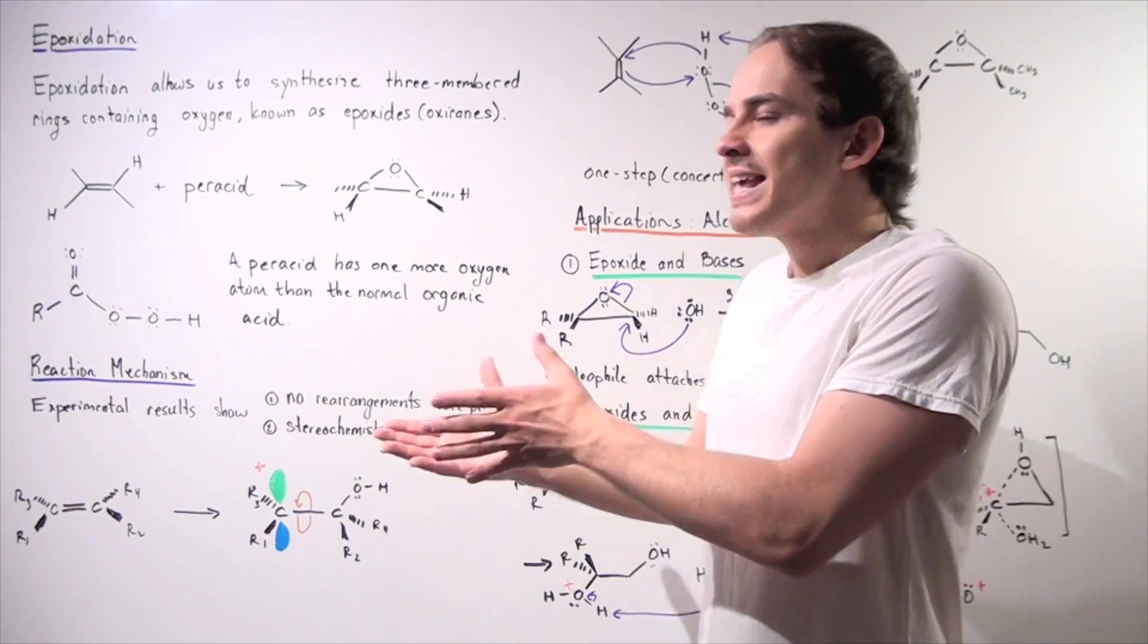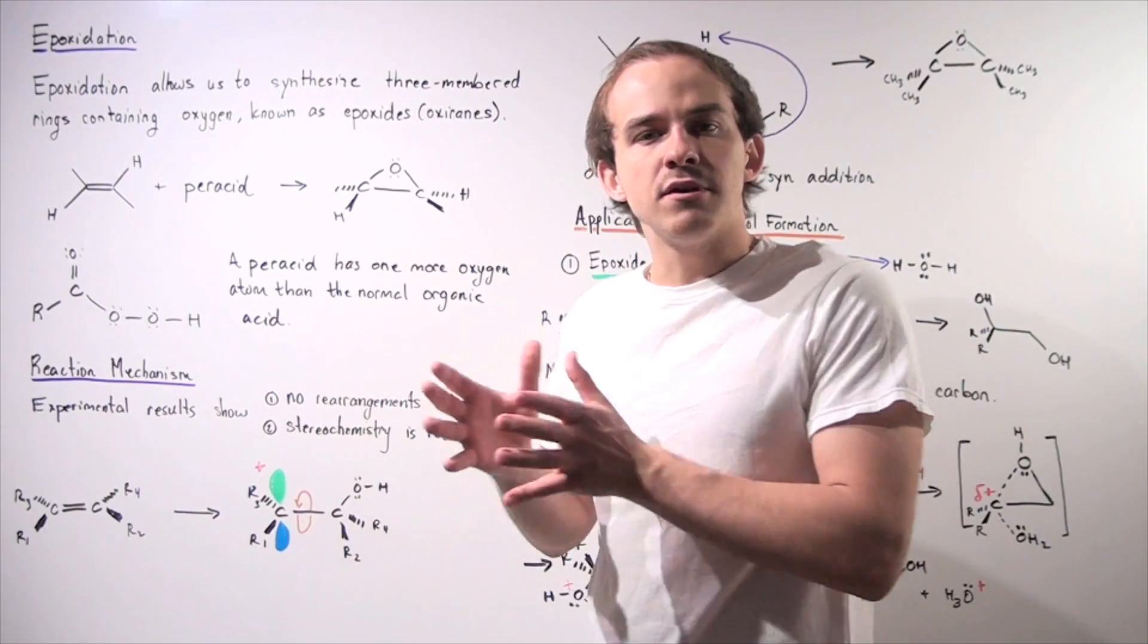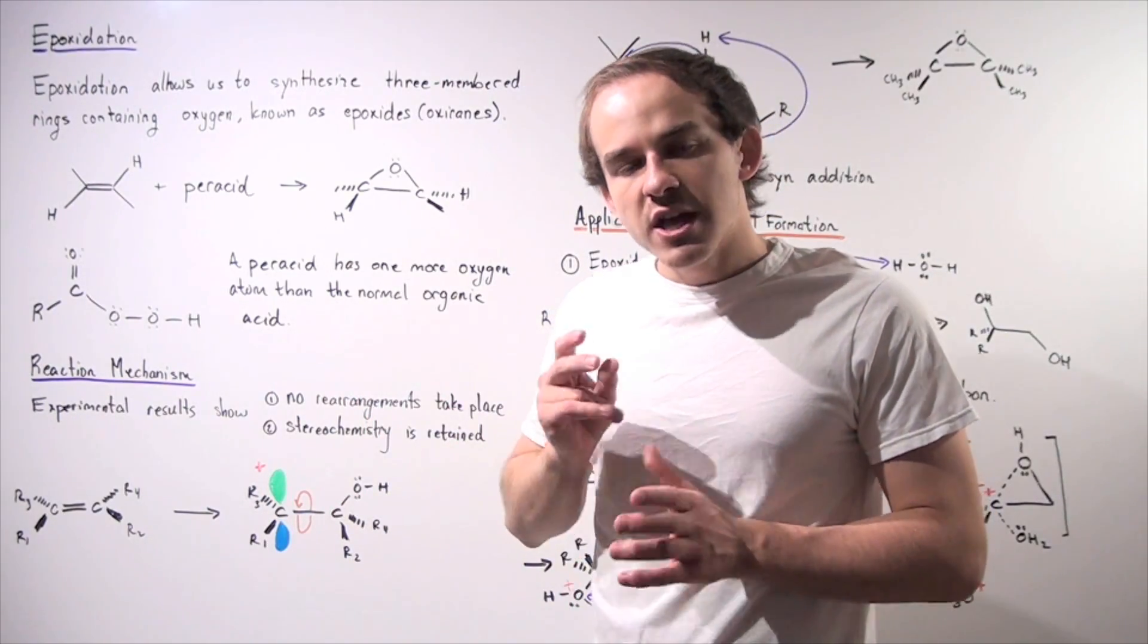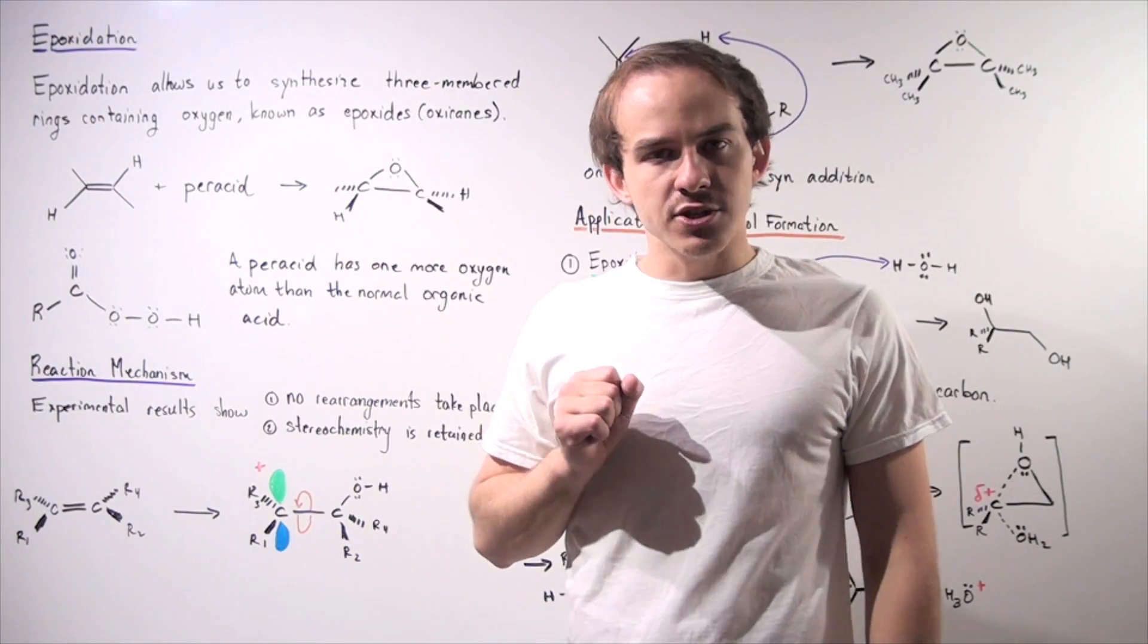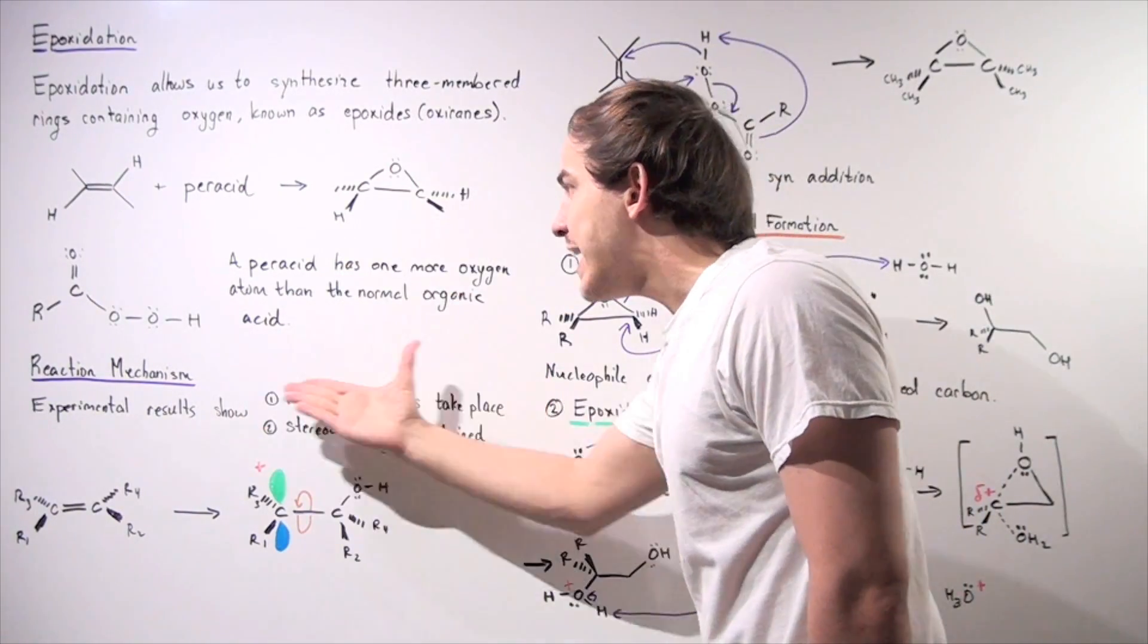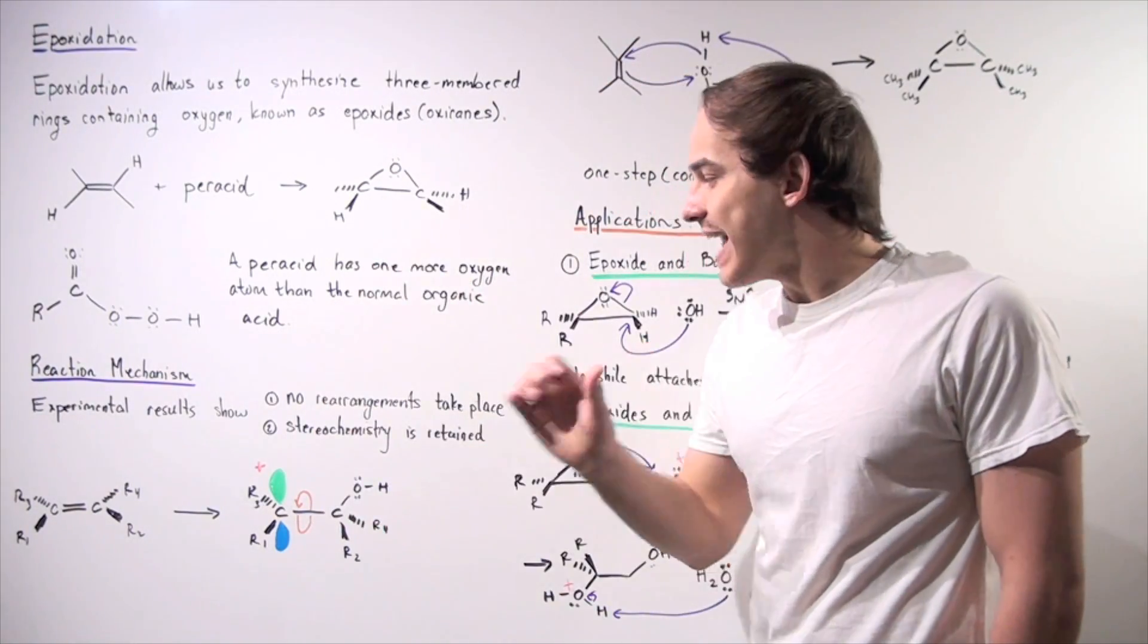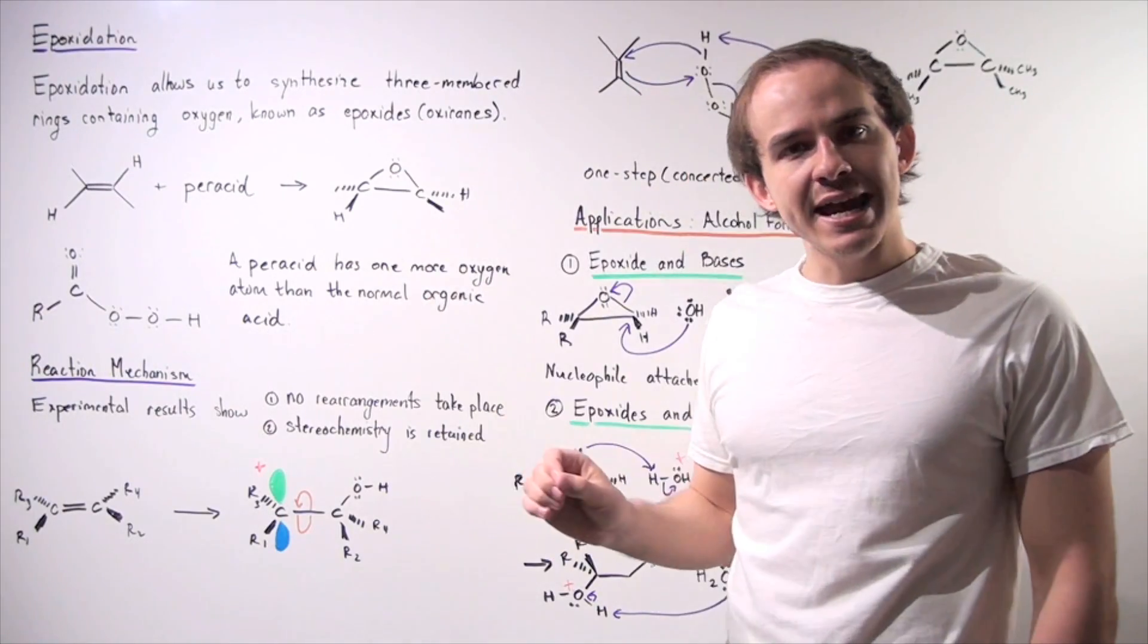Before scientists came up with the mechanism, they were able to see from experimental results that two things cannot take place in this epoxidation reaction. Firstly, no rearrangements of any kind take place. And secondly, the stereochemistry of our alkene is retained.